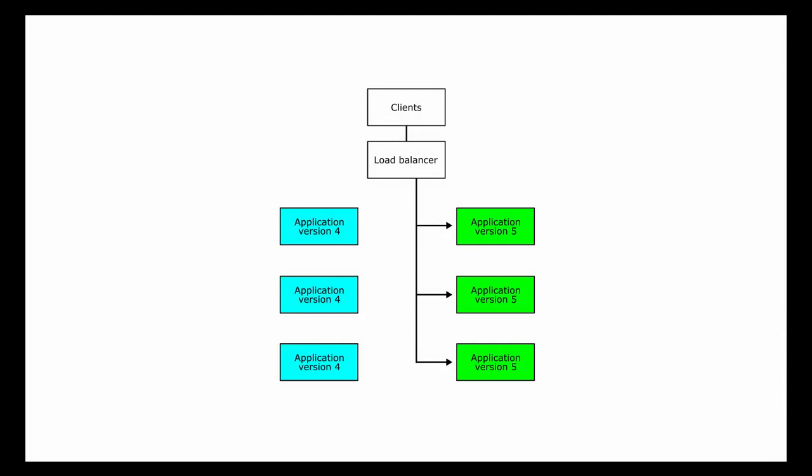Most people watching this video are probably familiar with blue-green deployments, so I'll just give a quick summary before I show it actually implemented. At a basic level, the blue and the green are identical copies of my production environment. While my customers are using the green environment, I can update the blue environment with a new version of my application. I can take my time making sure the new version on the blue environment works, then switch my customers to the blue environment with zero downtime.